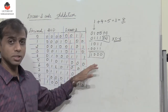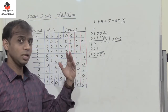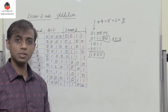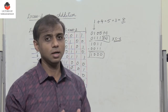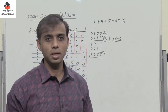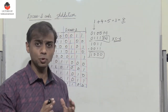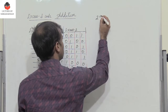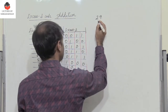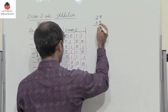Now let us take 2-digit numbers, and 3-digit numbers later, and see how we can perform XS3 addition, because there are a few rules there. So let us perform 29 plus 39.